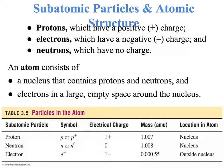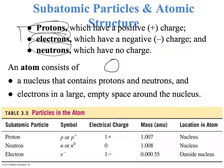There are three subatomic particles: protons, electrons, and neutrons. In an atom, we have the nucleus, and inside the nucleus, we have the protons and the neutrons.